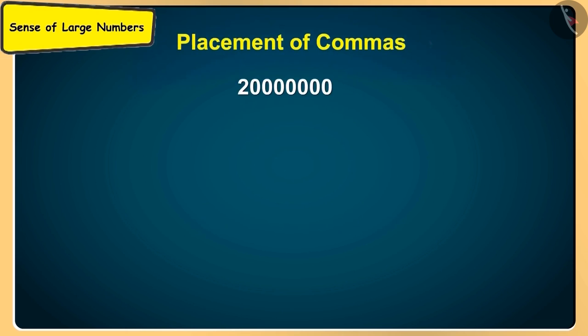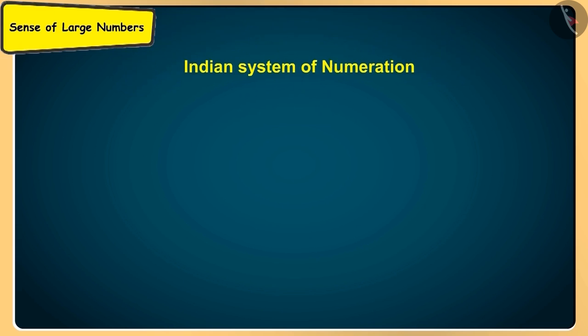But Didi, Delhi's population is written like this. So, how are we going to know where to put the commas? Listen, Sonu.